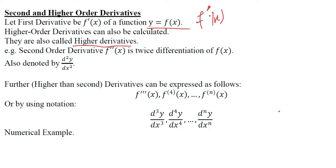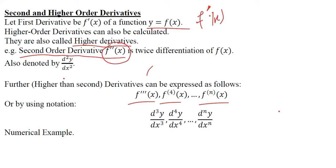There are different ways of symbolizing these derivatives. For example, if we are dealing with the second order derivative, we write it as f double prime of x. Another way is to write it as d²y/dx². For higher orders such as the third, fourth, and nth order derivatives, after writing three bars, we avoid writing four bars because it becomes very tedious.